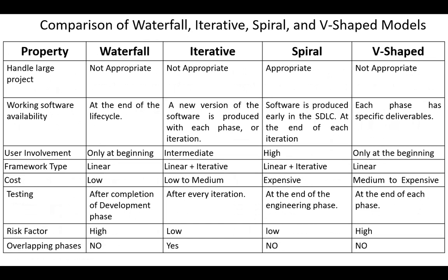Regarding the probability to handle large projects, waterfall, iterative, and V-shaped models are not appropriate to handle large projects, while the spiral model is appropriate to handle large projects, as is the agile model.